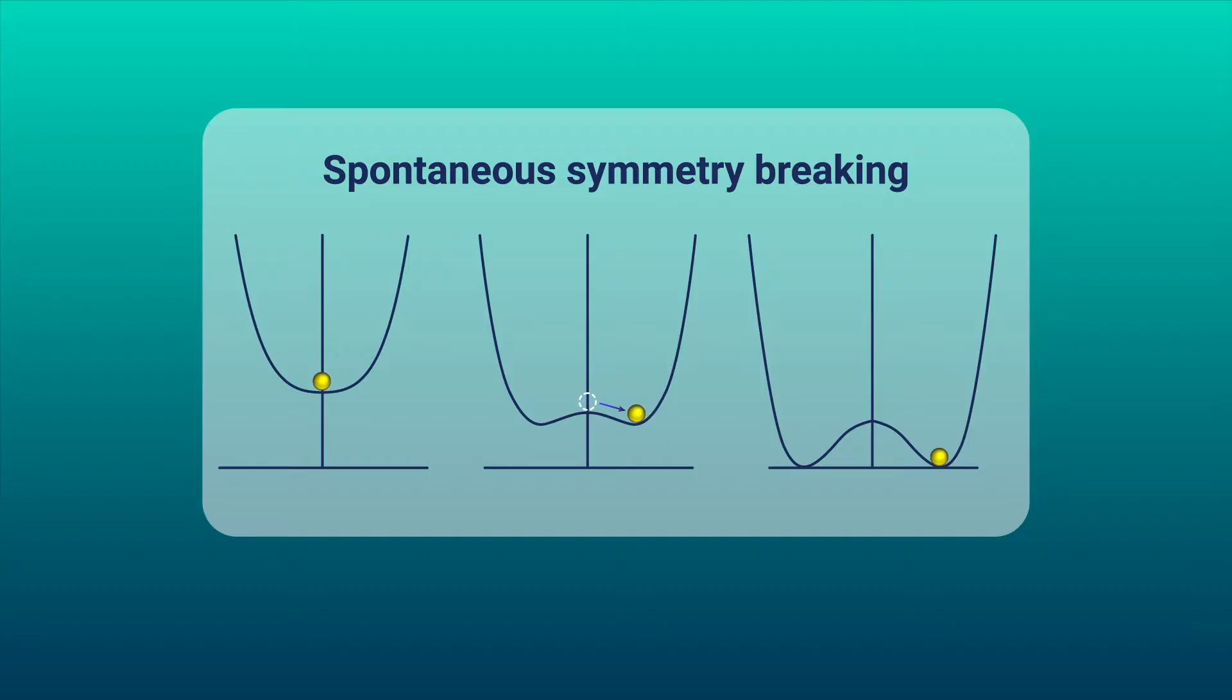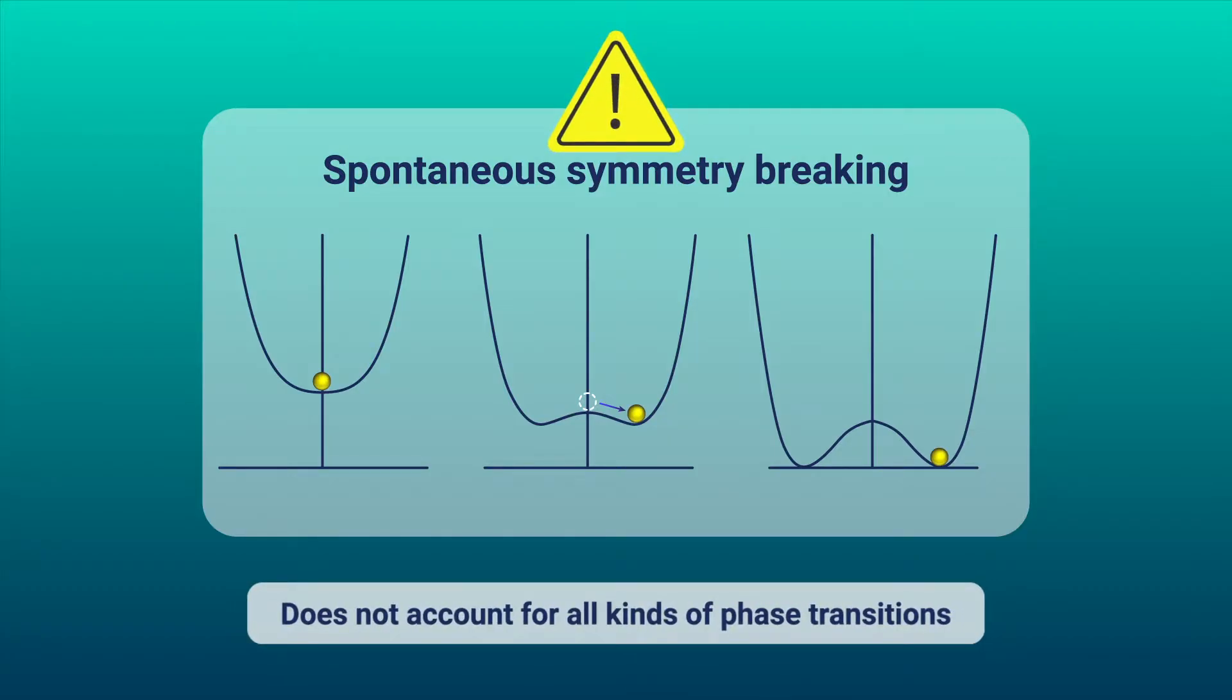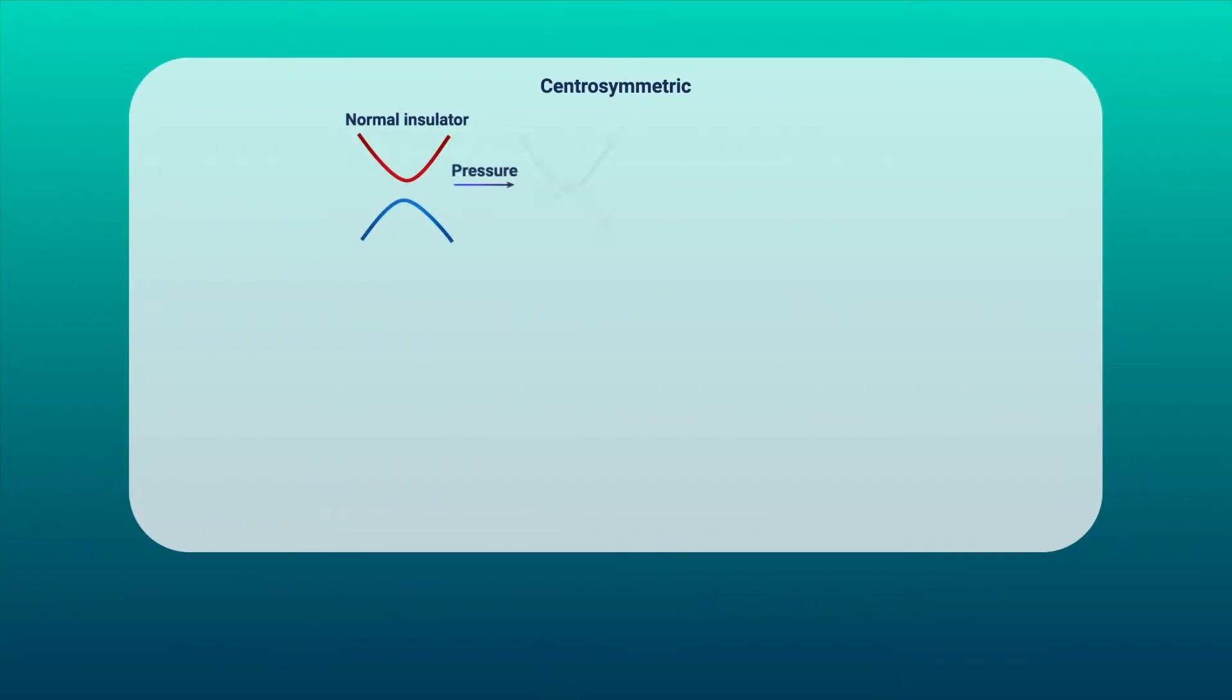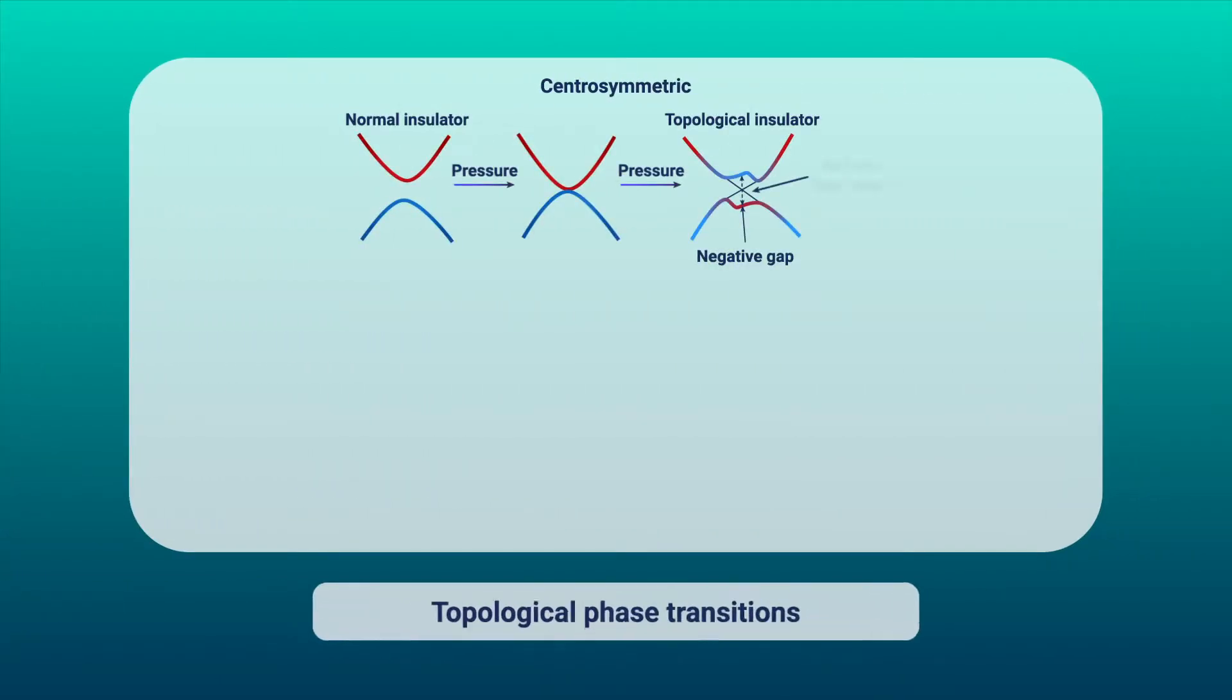Since then, however, other kinds of phases have emerged that cannot be characterized by spontaneous symmetry breaking. A now well-known example of such phases is the topological phases.